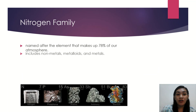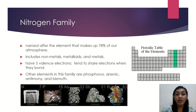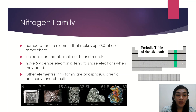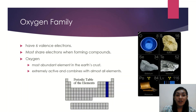Next, we have the nitrogen family, named after the element that makes up 78 percent of our atmosphere, which is nitrogen. It includes non-metals, metalloids, and metals, and they have five valence electrons. They tend to share electrons when they bond, so they do covalent bonding. Members include nitrogen, phosphorus, arsenic, antimony, and bismuth. Then we have the oxygen family with six valence electrons. They mostly share electrons when forming compounds. Oxygen is the most abundant element in the Earth's crust and is extremely active, combining with almost all elements to form oxides.